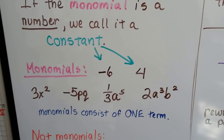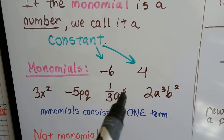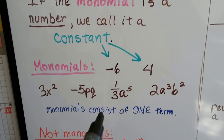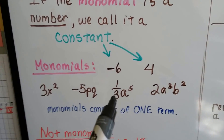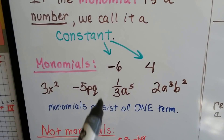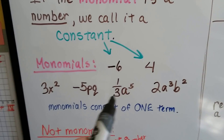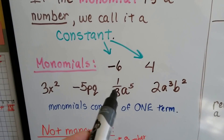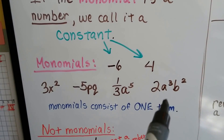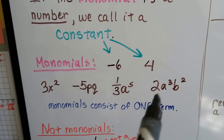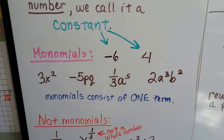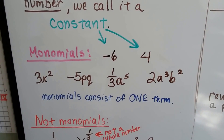Now, they have to be whole number exponents. So that 5 is a whole number, so this one-third fraction coefficient counts — because that's just the coefficient, that's not the exponent that's a fraction. And 2a to the third power b to the second power is also a monomial. They each consist of one algebraic term.